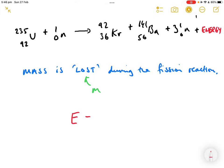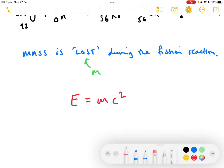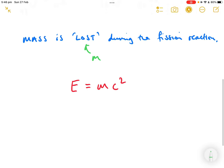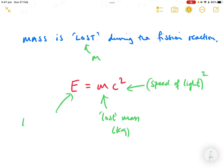This famous equation, E is mc-squared, describes the amount of energy produced by this lost mass. There's the lost mass in kilograms, that's obviously the speed of light all-squared, and this is the energy released in joules.